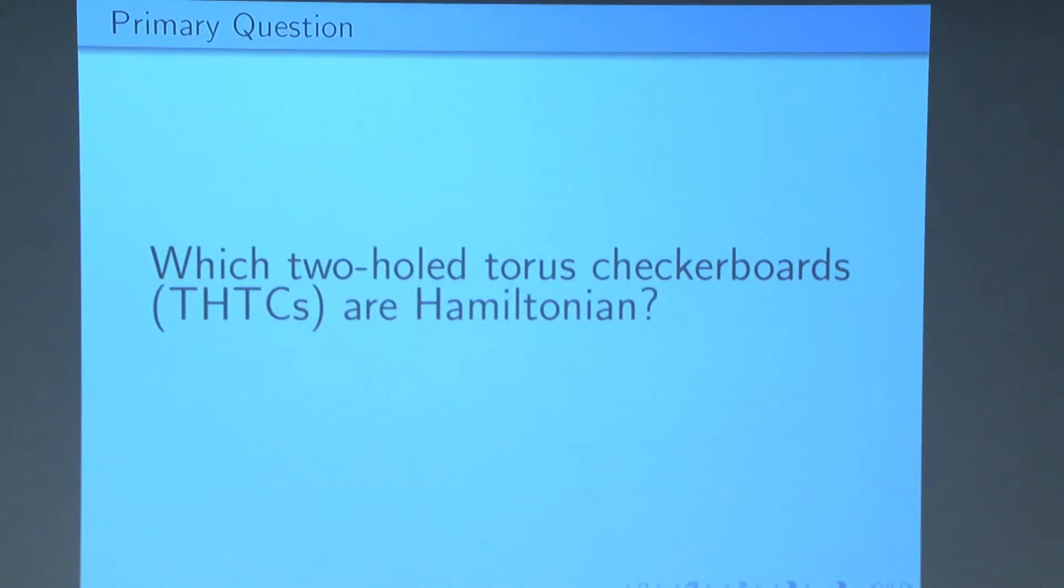So that's our question. What sizes of two-hole torus checkerboards are Hamiltonian?